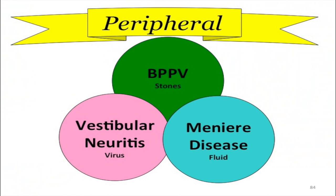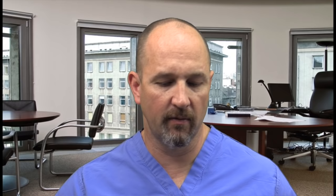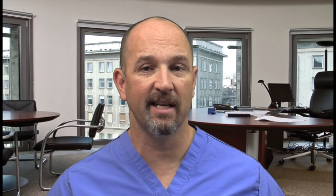Three causes of peripheral vertigo: BPPV, a virus, and fluid. BPPV — benign paroxysmal positional vertigo — is like a stone in a snow globe. They turn their head quickly, get horrible vertigo for about one minute. Vestibular neuritis is a virus; Meniere's disease is fluid buildup. For thyroid: hyperthyroid is Graves' disease; De Quervain's thyroiditis is the only cause of a painful thyroid. The Finkelstein test — thumb in fist bent down — tests De Quervain's tenosynovitis.